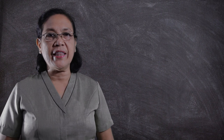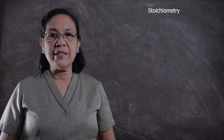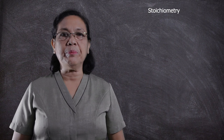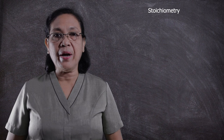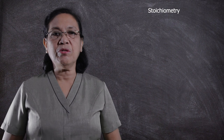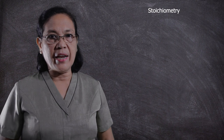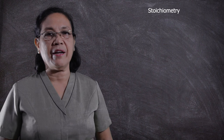When we say stoichiometry, this deals with the measurement or determination of a relationship based on the formula of a compound and the balanced chemical reaction. That is why it is important to know how to write correctly the formula of a compound and how to balance a chemical reaction. Thus, the nomenclature of inorganic compounds and how to write the chemical reactions and balance them.